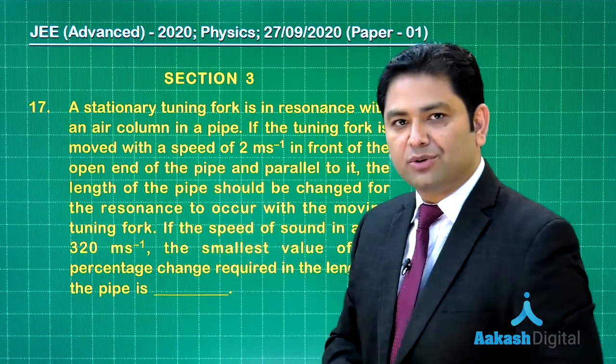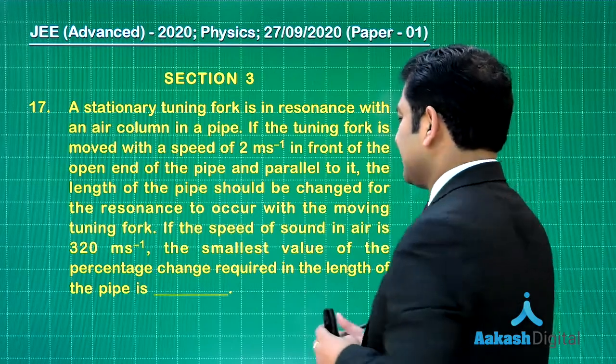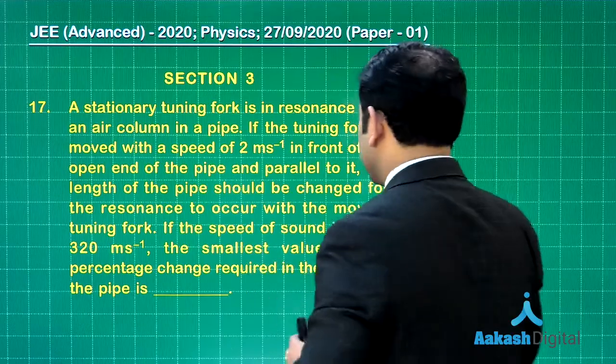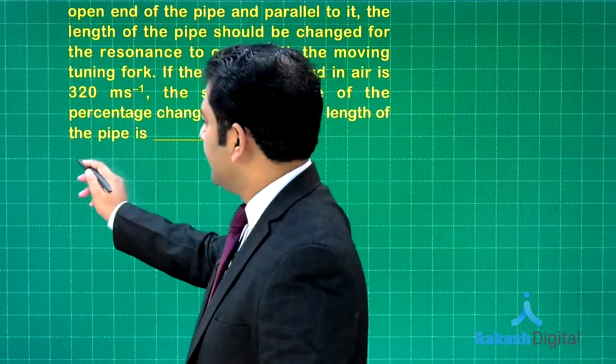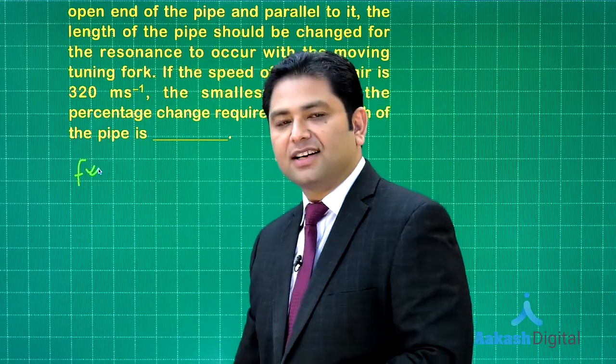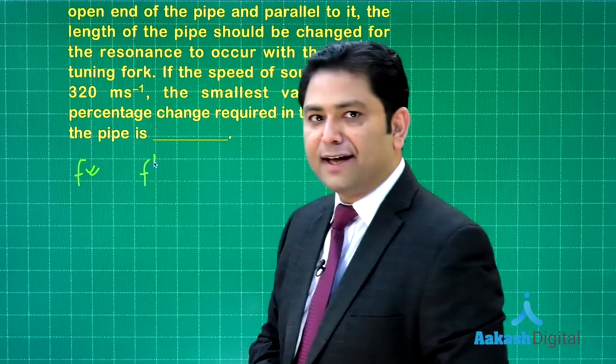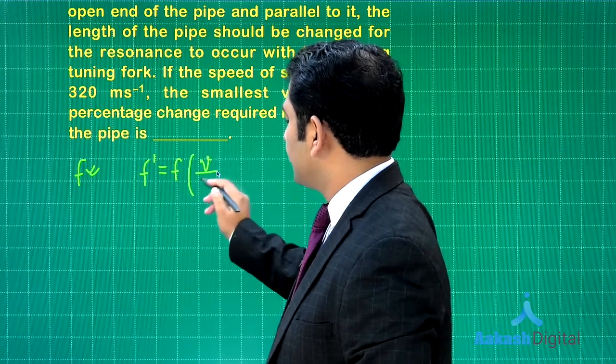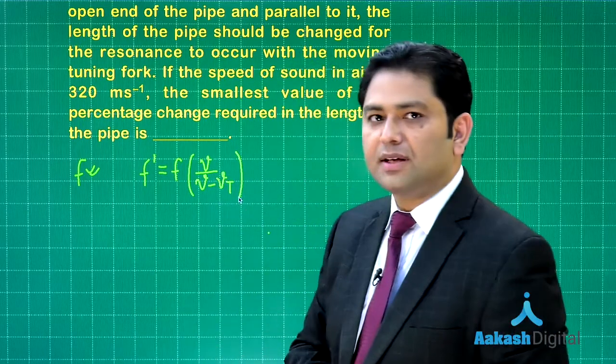All the given factors are there: the speed of the tuning fork and the speed of sound have been given. In the first case, let me assume f is the frequency of the tuning fork. If the tuning fork starts approaching, I'll call that f'. What will be the value of f'? Since the source is moving, it's f times v divided by v minus v_t.